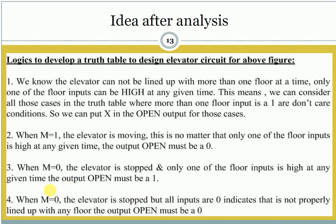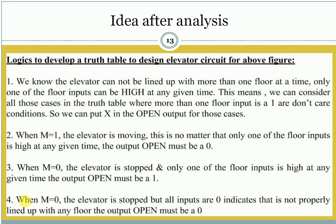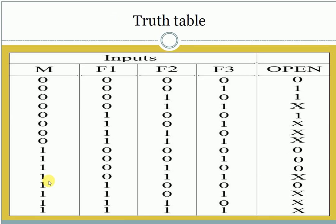But when M equal to 0 and the elevator is stopped but all floor inputs are 0, that indicates the elevator is not properly lined up with any floor. In that case, open must be 0 — the door will be closed. So here we see the truth table, and we will get only three 1s.